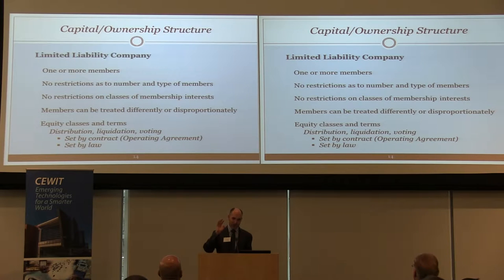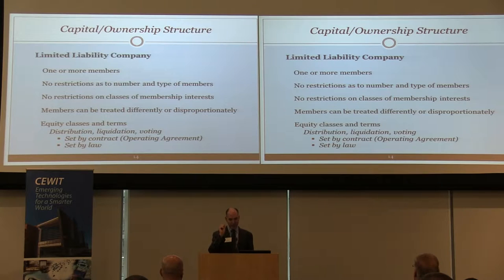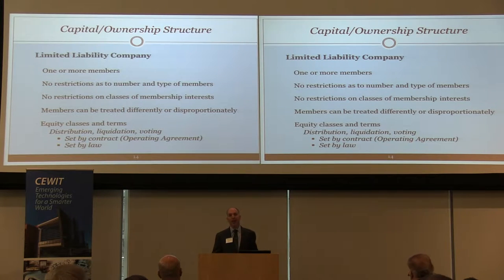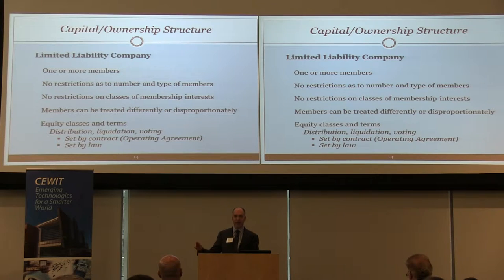Member A, you have 48% of the economic rights — rights to sharing in profits, loss, and distributions. Member B, you have 52% in the same thing. However, Member A, you have 75% of the vote, and Member B, you have 25% of the vote.